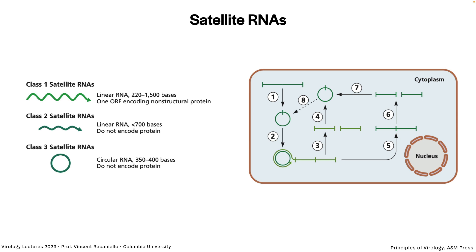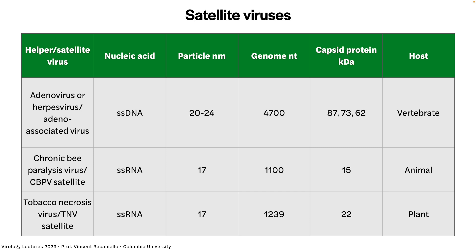There are different satellite sizes: class one are linear RNA between 220 and 1500 bases, usually one non-structural open reading frame; class two are linear RNAs less than 700 bases with no protein; and class three satellites are circular, 350 to 400 bases, encoding no protein. Linear satellites are usually circularized when they come into the cell, then copied by rolling circle replication — by the helper RNA-dependent RNA polymerase in the case of RNA helper viruses. They're then cleaved and go through the cycle again.